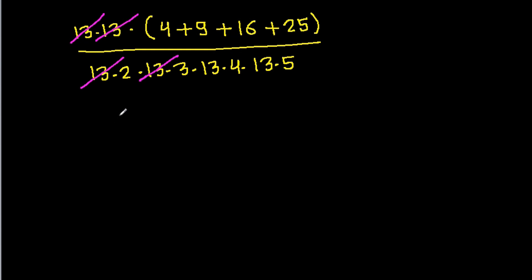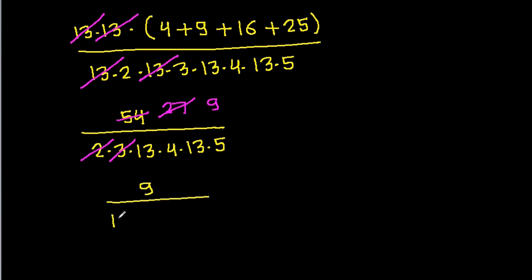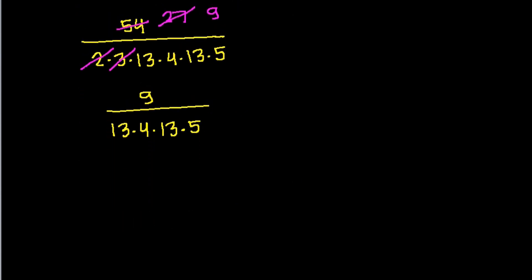And 4 plus 9 is 13, plus 16 is 29, plus 25 is 54. So we get 54 divided by 2 times 3 times 4 times 5. And 2 times 27 is 54, so it simplifies to 9 divided by 13 times 4 times 13 times 5.